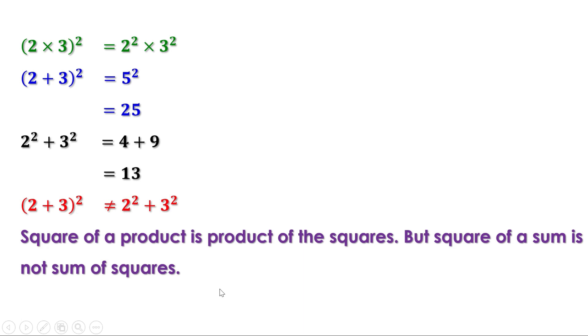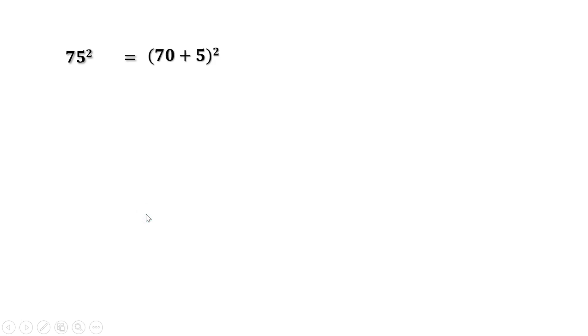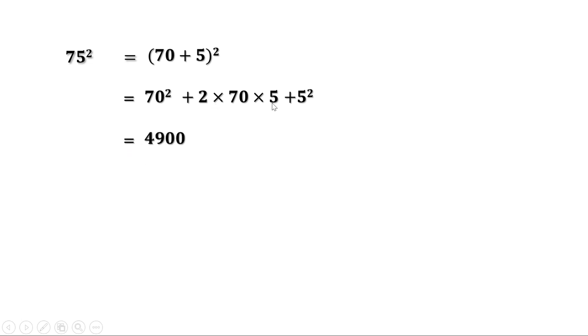We can use this identity to find squares of numbers. For example, to find 75²: write 75 = 70 + 5, so 75² = (70 + 5)² = 70² + 2 × 70 × 5 + 5². Now 70² = 4900, 2 × 70 × 5 = 700, and 5² = 25. Therefore 75² = 4900 + 700 + 25 = 5625.